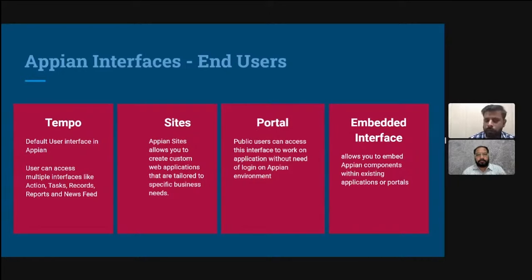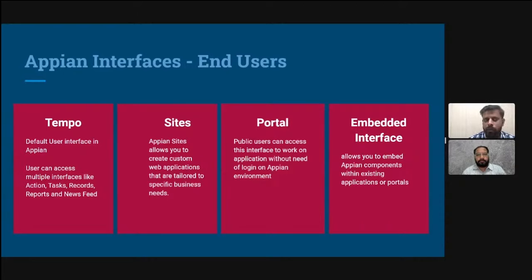From Tempo, users can access multiple sub-interfaces. Actions are for creating new requests — for example, filling an HR form for the first time is an action. Tasks are assigned work — if I raise a request and it goes to HR, for HR that becomes a task. Records provide a read-only or view of request details at any time, and you can also take decisions like editing or closing a request from records.